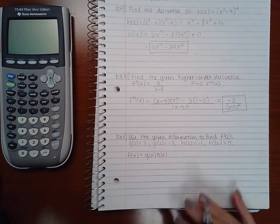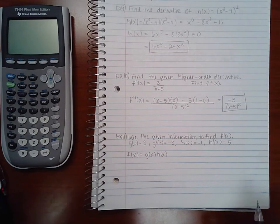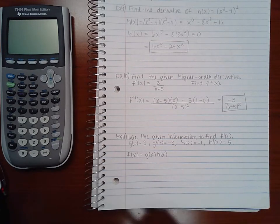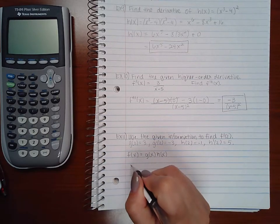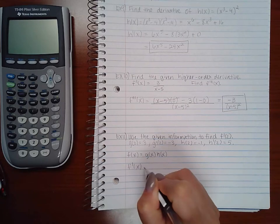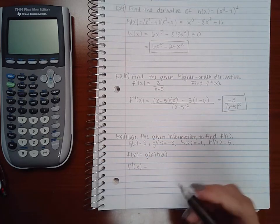Now in example 11 it says use the given information to find f prime of 2. So they give me all these little bits of information and then they want me to find this. Well in order for me to find f prime of 2, I first have to figure out what f prime is. And since it consists of a product I have to apply the product rule.